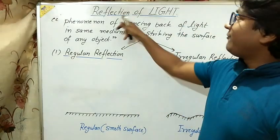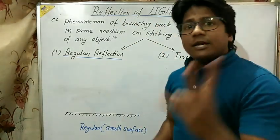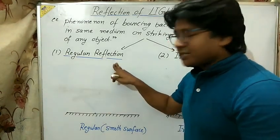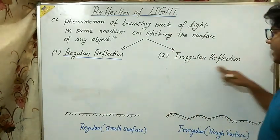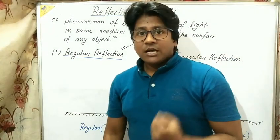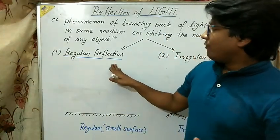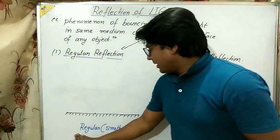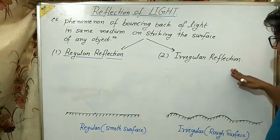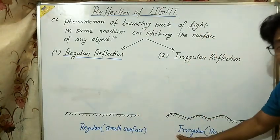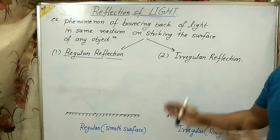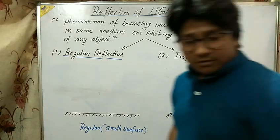Coming back to the point, reflection of light occurs in two ways: regular reflection and irregular reflection. As the name suggests, regular reflection will be performed on regular or smooth surfaces, whereas irregular reflection will be performed on irregular or rough surfaces.